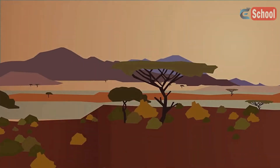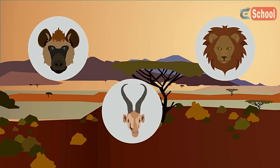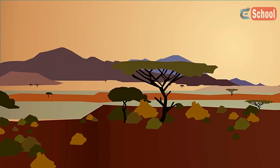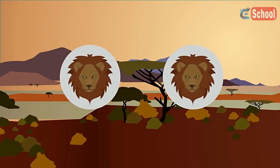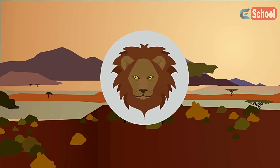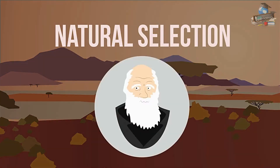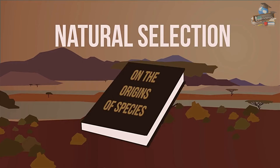In nature, all organisms compete with each other for resources in order to survive. Competition between members of the same species is what makes organisms evolve. This theory of competition and survival of the fittest is called natural selection, and was originally proposed by Charles Darwin in his book On the Origin of Species in 1859.